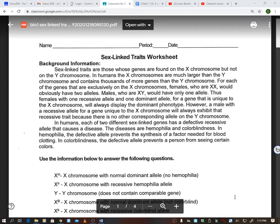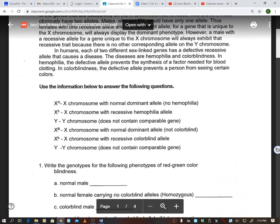In humans, each of the two different sex-linked genes has a defective recessive allele that causes a disease. The diseases are hemophilia, which just means if I were to bump into something, I might, instead of just a normal bruise, I could bleed to death from under my skin. Or if I cut myself open, I could bleed to death. I don't clot. In colorblindness, the defective allele prevents a person from seeing certain colors. Obviously, one is worse than the other.